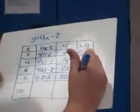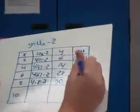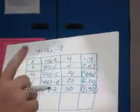And then you have 8, 30 as your ordered pair.